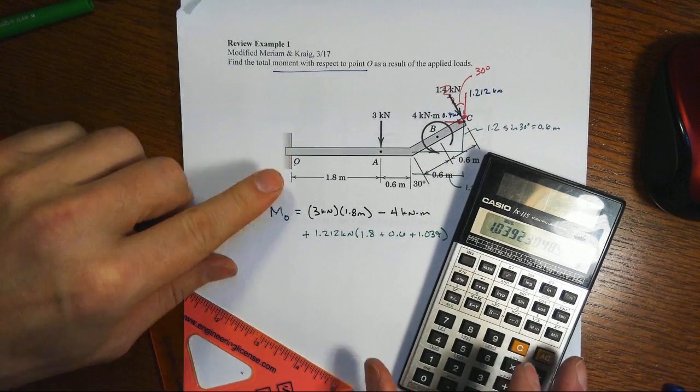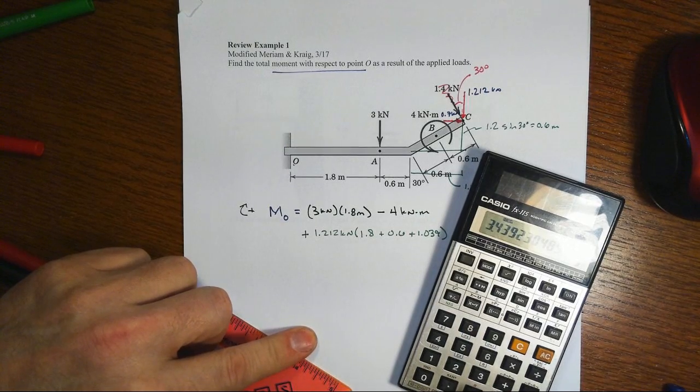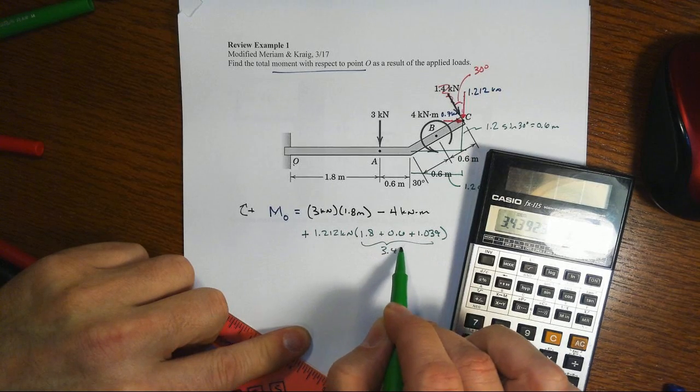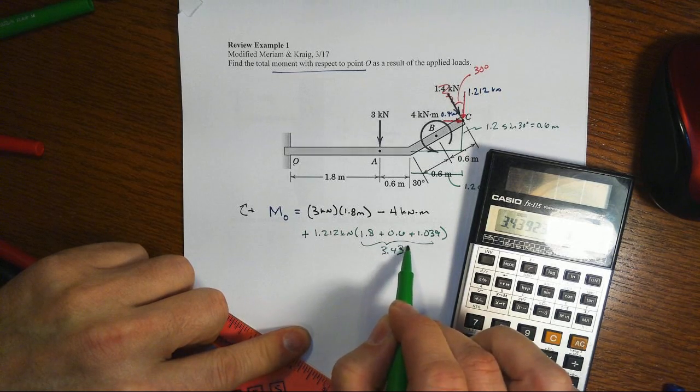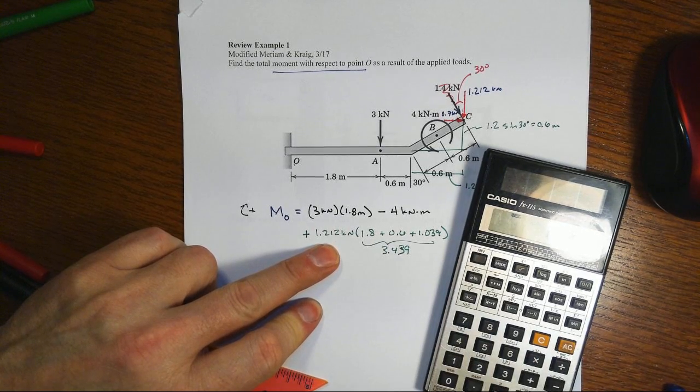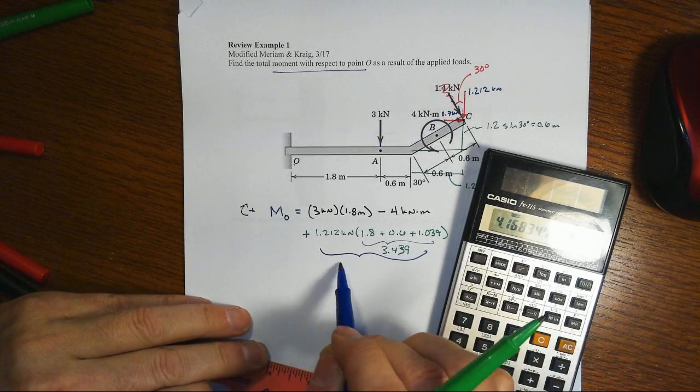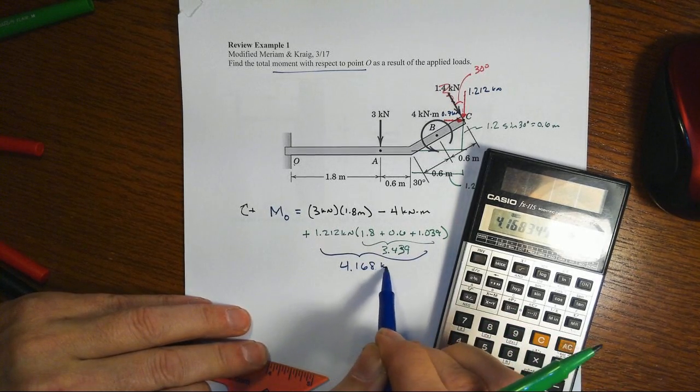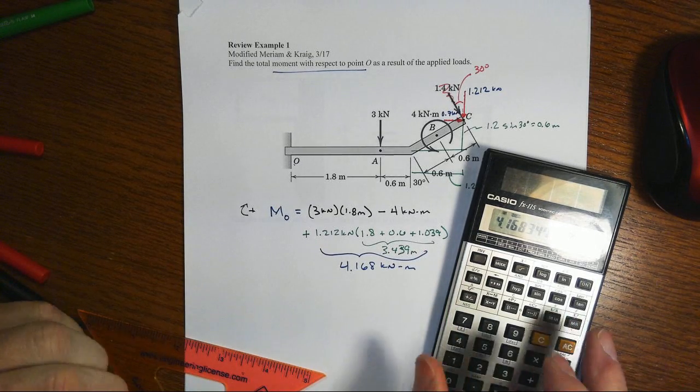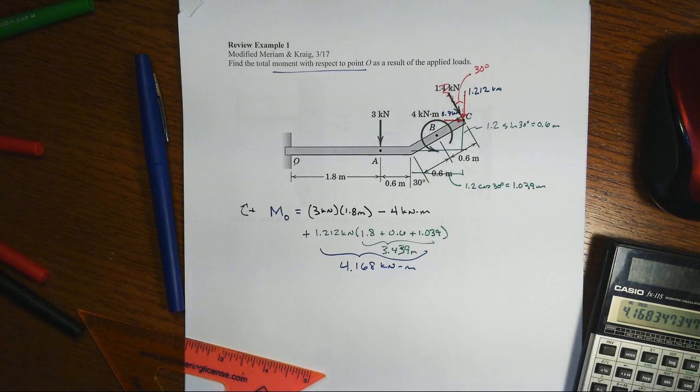I've got that in my calculator now, so I'm going to add to it the 0.6 plus the 1.8. That's a total of 3.439 meters, and then might as well go ahead and multiply times 1.212. That's going to get that whole piece of 4.168 kilonewton meters. I've got to include that, put it in my memory so it's there. That's just the Y component that we're dealing with.